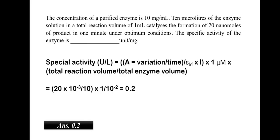The concentration of a purified enzyme is 10 mg per milliliter. 10 microliters of the enzyme solution in a total reaction volume of 1 milliliter catalyzes the formation of 20 nanomoles of the product in 1 minute under optimum condition. The specific activity of the enzyme is. Specific activity is equal to variation by time into the molar concentration of the enzyme into 1 micromole which is equal to 20 into 10 to the power minus 3 by 10 into 1 into 10 to the power minus 2 which would be equal to 0.2.